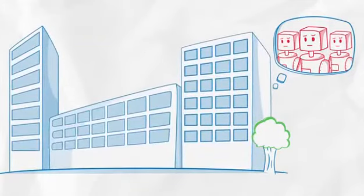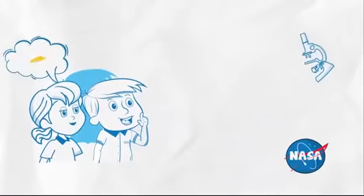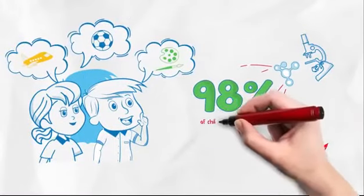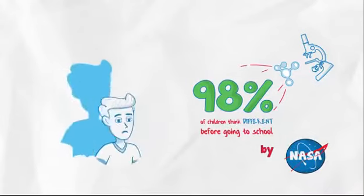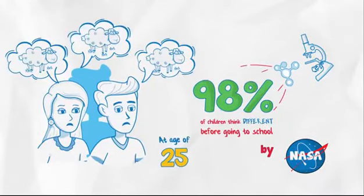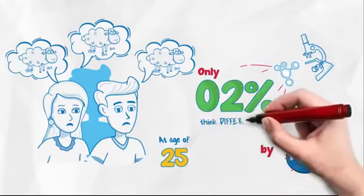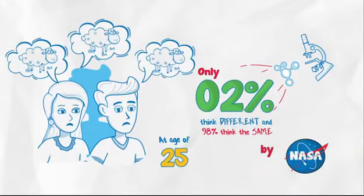A study by NASA shows that 98% of children think different before they start going to school. As they go through this education system, at 25 years of age, only 2% think different and 98% think the same.